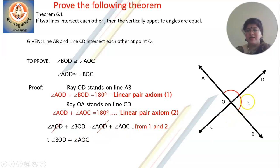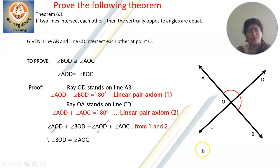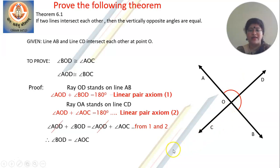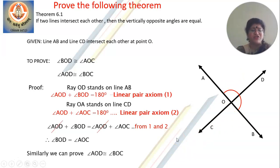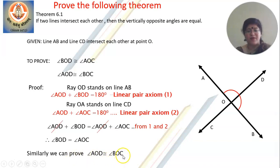We have proved that vertically opposite angle BOD is congruent to angle AOC. Similarly, students, you can prove angle AOD is congruent to angle BOC. You need not prove it fully — you can just mention: similarly, we can prove angle AOD congruent to angle BOC. This is an important theorem.